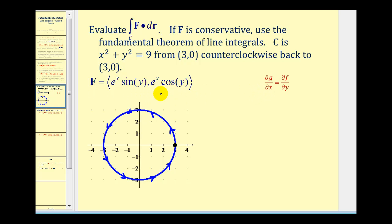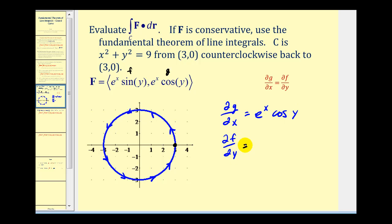Let's first check if the vector field is conservative. Since this vector field is in R², we verify that the partial derivative of g with respect to x equals the partial derivative of f with respect to y, where the x-component is f and the y-component is g. The partial derivative of g with respect to x is e^x cos y, and the partial derivative of f with respect to y is also e^x cos y. These are equal, so the vector field F is conservative.